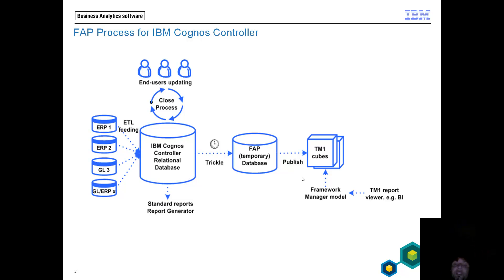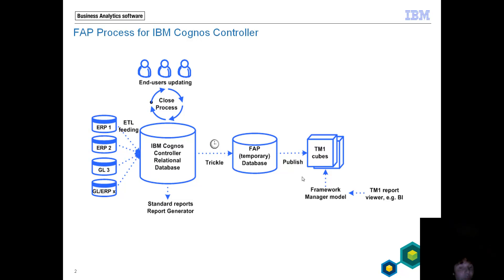The first slide shows a flow — you're seeing data from the ERP system moving into the Cognos Controller relational database, trickling into TM1. When we talk trickle, basically if we make any changes in Cognos Controller — any change in a journal entry, any change in an input form — that will also be pushed through as part of the trickle publish to update the TM1 cube. The TM1 cube is very critical here because this is the one we're going to connect to as part of our OLAP sources.